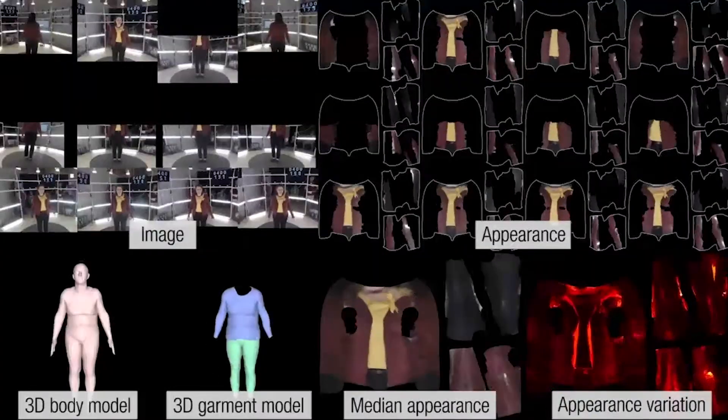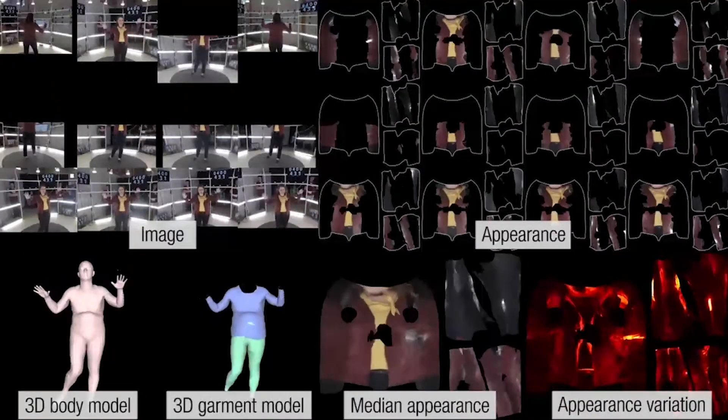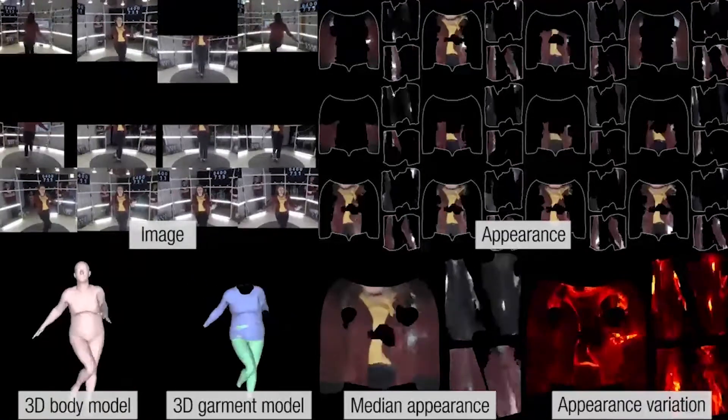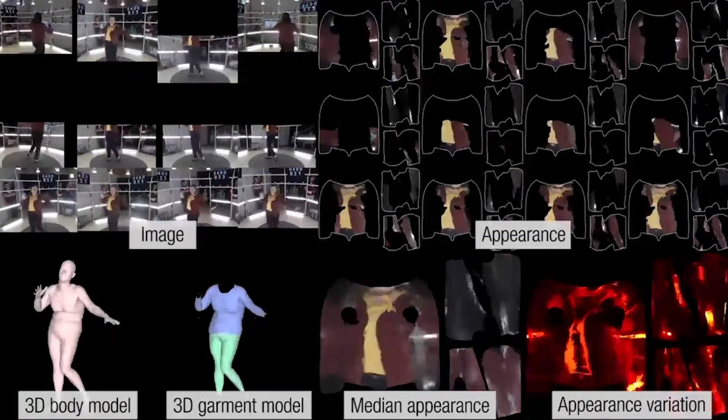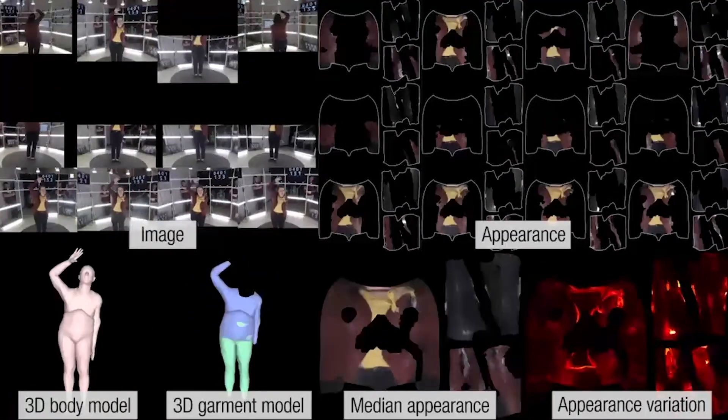The HUMBI body and garment datasets aim to model detailed geometry and appearance while subjects perform a range of motions and instructed dance.